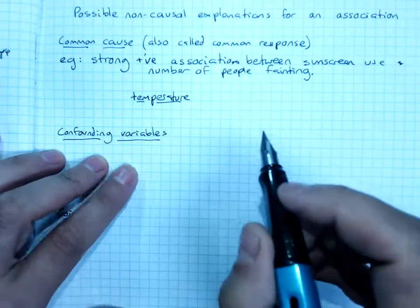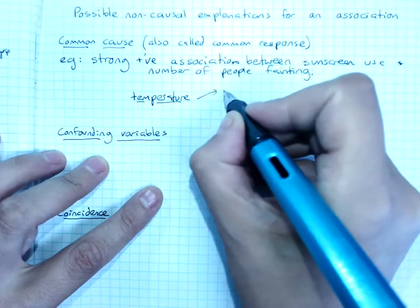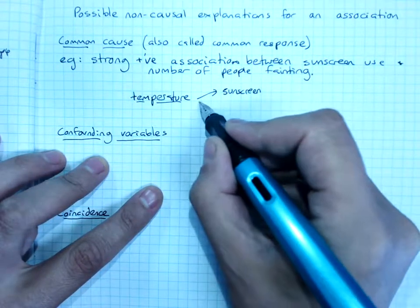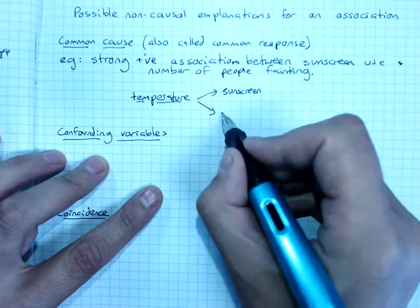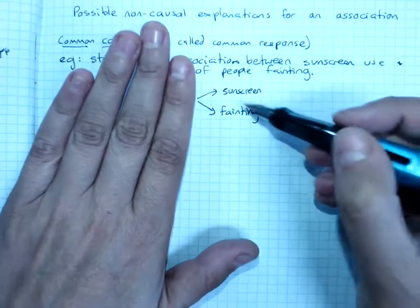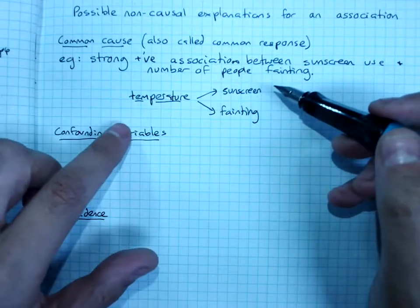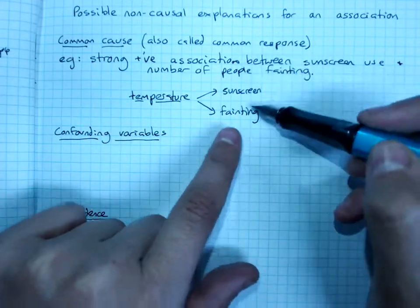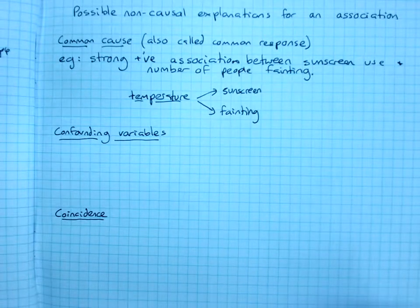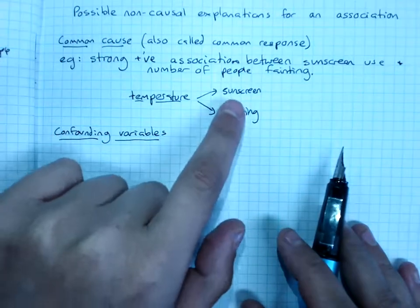When you've got a high temperature or a very sunny day, that tends to drive people wearing sunscreen, which is less likely on a cool or cloudy day. And a high temperature on a sunny day also tends to drive people fainting. So while what we see is sunscreen use goes up and fainting goes up, they're both driven by a common cause, or they're both having a response to another variable. So common cause is one really frequent way that we see a non-causal explanation for an association.